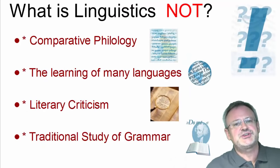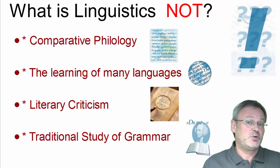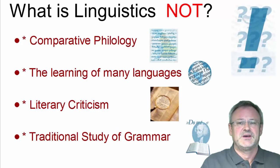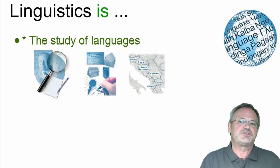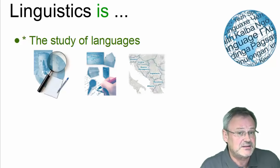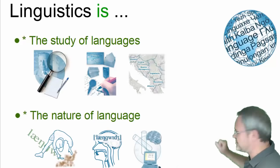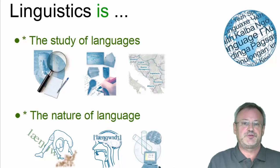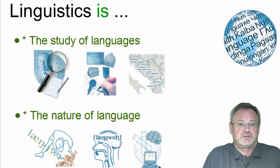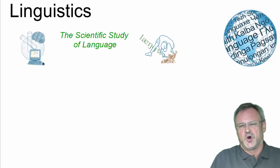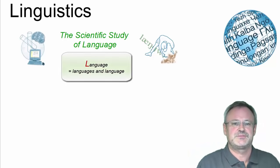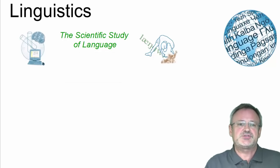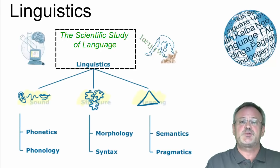Having defined four scenarios of what linguistics is not, let's now look at what linguistics is. There are two central goals of linguistics. First, linguists are interested in studying particular languages to provide accurate and complete descriptions of them. Secondly, linguists want to obtain information about the nature of language in general — to find out how language works. Put simply, linguistics is the scientific study of language, using a capital L to emphasize that we mean both languages and language, raising numerous research questions across the central branches and neighboring disciplines.